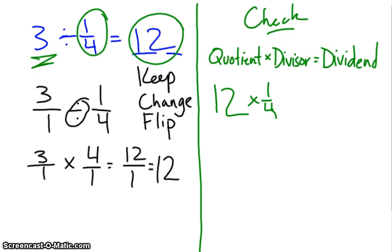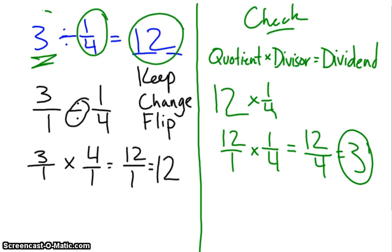So, I turn the 12 into a 12 over 1. I multiply that by 1 over 4. 12 times 1 is 12. 1 times 4 is 4. 4 goes into 12, 3 times evenly, which is, in fact, my dividend. And so, I know that my division equation over here worked out correctly. So, 3 divided by 1 fourth equals 12. Good luck.